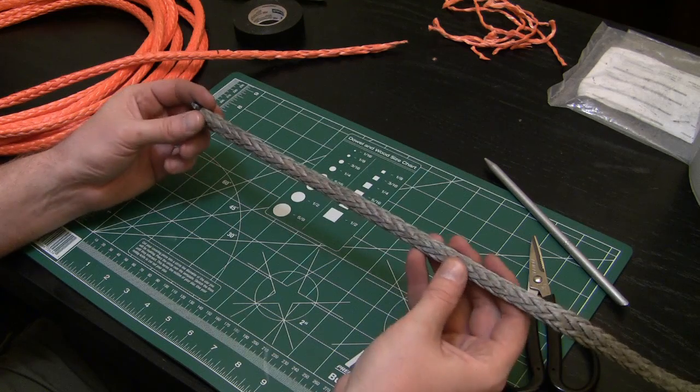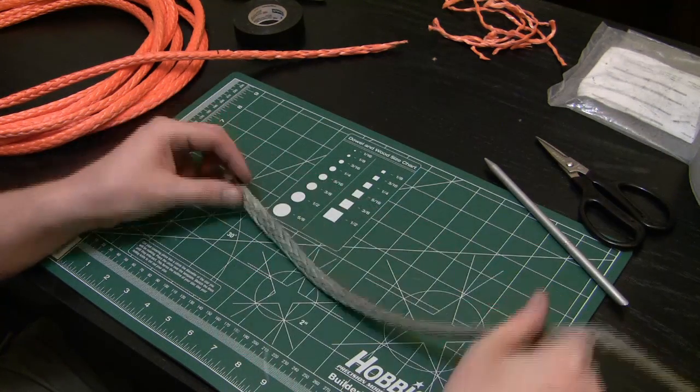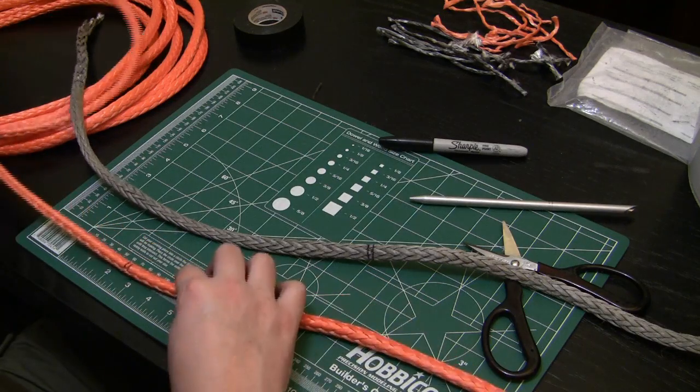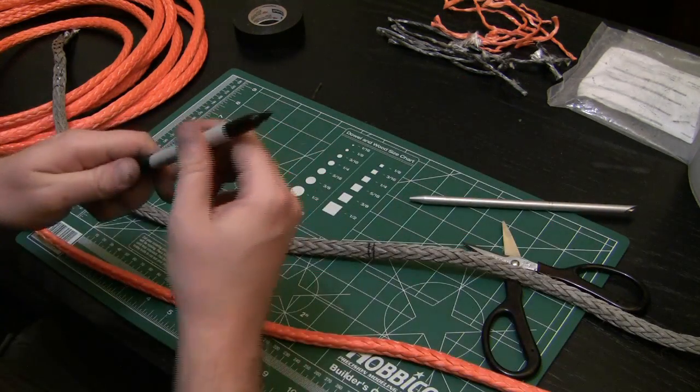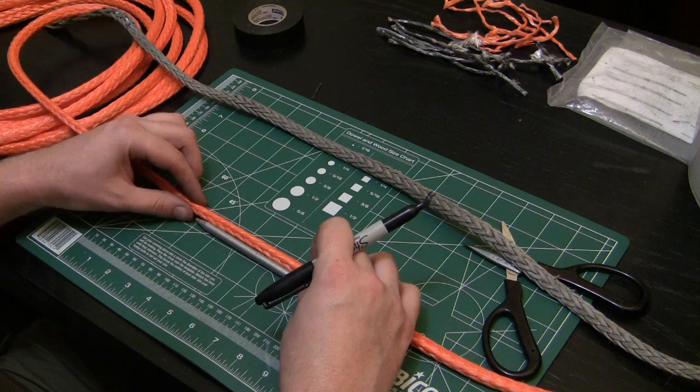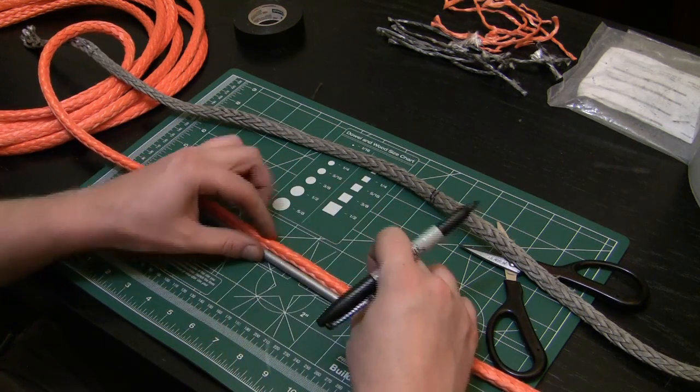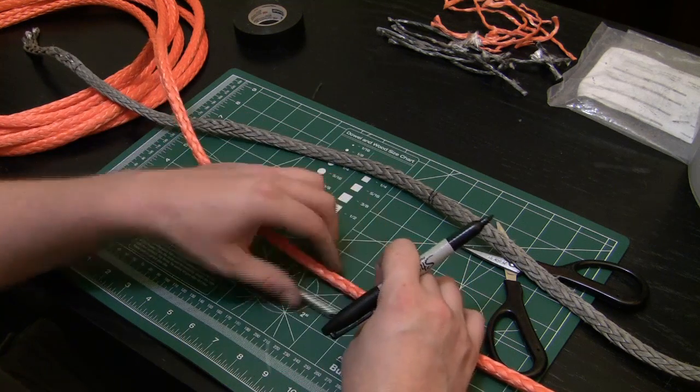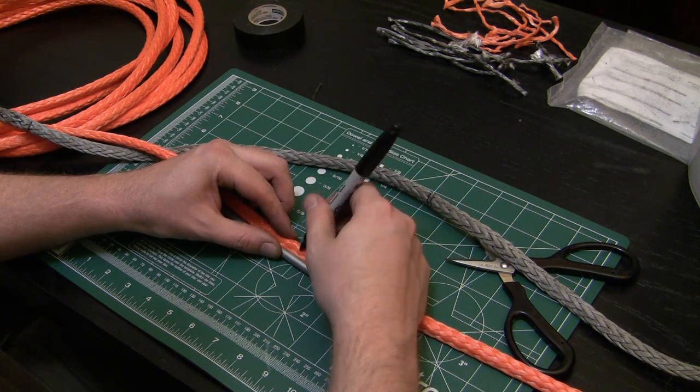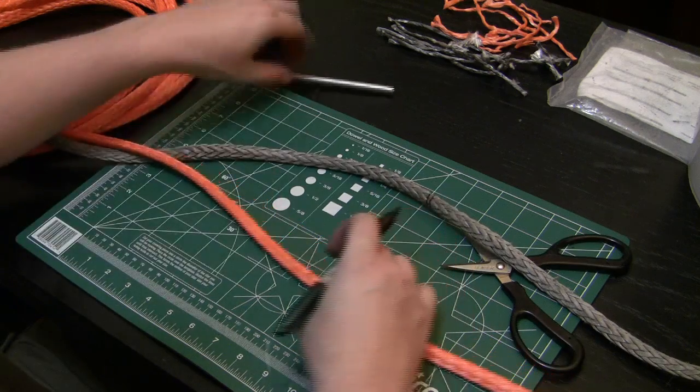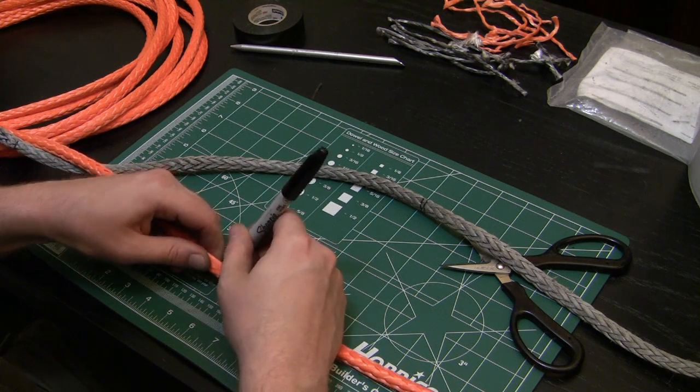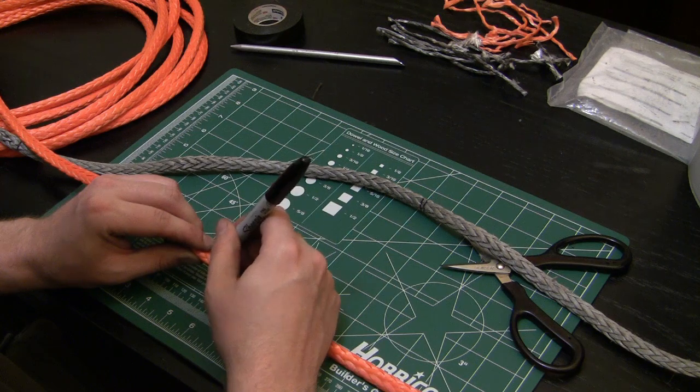This is the other part, the line that was on my winch already, and we're going to repeat the same process. Now what we want to do is mark our exit. So for mark two, we're going to go one, two, three and a half fid lengths. Make this mark go all the way around.